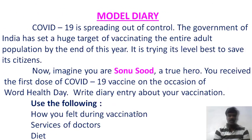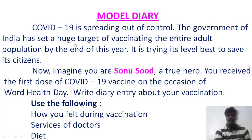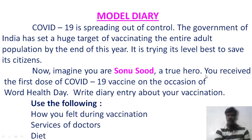Here we have a model diary entry based on Covid-19 vaccination. Covid-19 is spreading out of control. The Government of India has set a huge target of vaccinating the entire adult population by the end of the year. Imagine you are Sonu Sood, a true hero. You received the first dose of the Covid-19 vaccine on World Health Day.